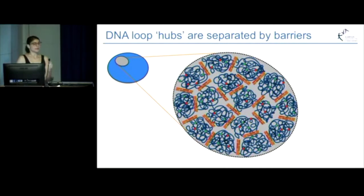Now, that means it's really important that the right loops are in place, and part of the way that the cell achieves this is by having barriers between these looping hubs. At this point in time, we don't actually know what barriers are comprised of.